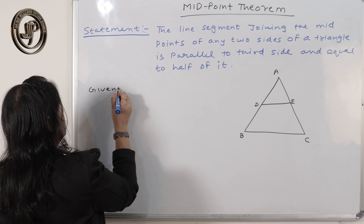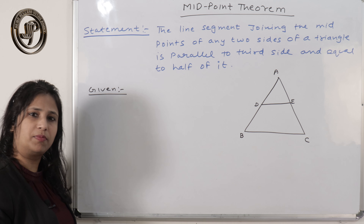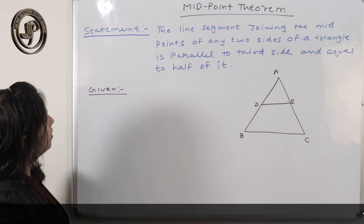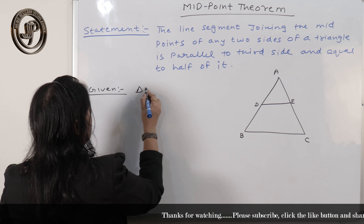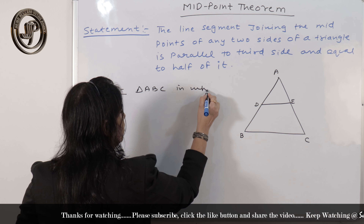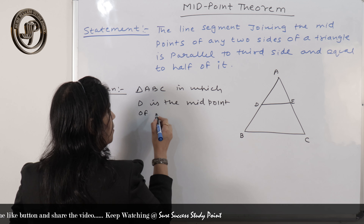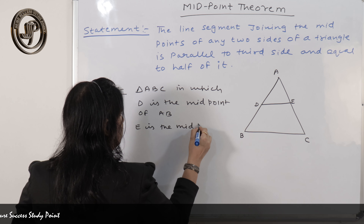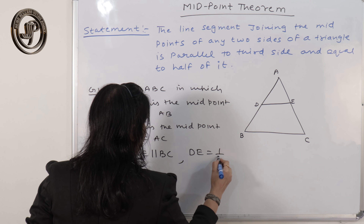You must memorize the steps for doing theorems very well. The statement must come first, written properly. If it says 'state and prove the midpoint theorem', you have to write the statement. But if the statement is given and you are asked to prove it, the statement is not required — but still memorize it. So, what is given? Triangle ABC in which D is the midpoint of AB, and similarly E is the midpoint of AC.